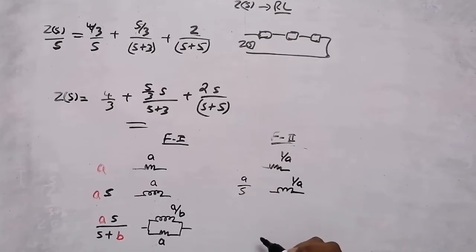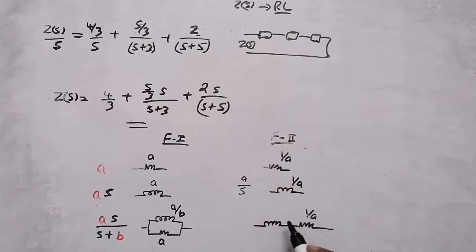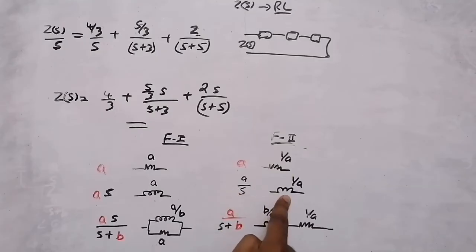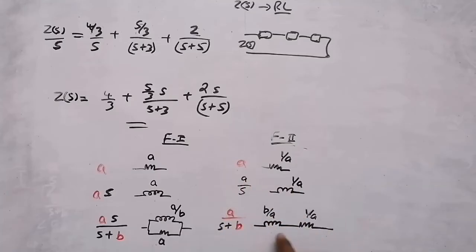In Foster Form 1, if there is only a constant value A, it is a resistor with value A. If s is in the numerator, it is an inductor. In Foster Form 2, if there is a constant A, the resistor value is 1 by A. If s is in the denominator, it is an inductor with value 1 by A. For a combination of inductor and resistor in Foster Form 2, they are connected in series, with resistor value 1/A and inductor value B by A.